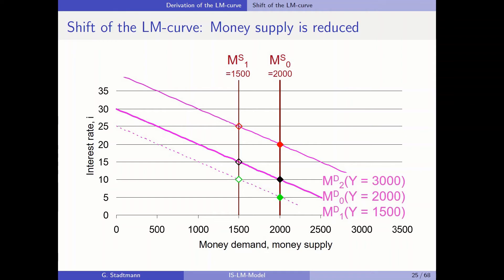In this diagram we can see the green, black, and red scenarios with different income levels, which we used to derive our first LM curve. We can also use this graph to ask: what happens to the LM curve if money supply is reduced from 2000 to 1500? The interest rate increases. In the black scenario, the interest rate increases from 10 to 15. In the green scenario, the interest rate increases from 5 to 10.